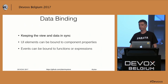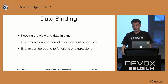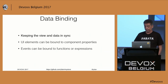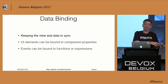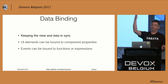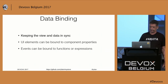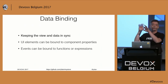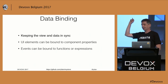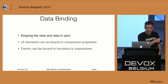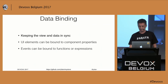Data binding is about keeping data and UI in sync. Something changes in the properties of your classes and immediately you see changes on the UI. Or the other way around — if the user is typing something in a field, we want to sync it with the property. The user clicked a button — we want to invoke a method in your class. This is all done using binding. In Angular it is implemented using unidirectional binding.